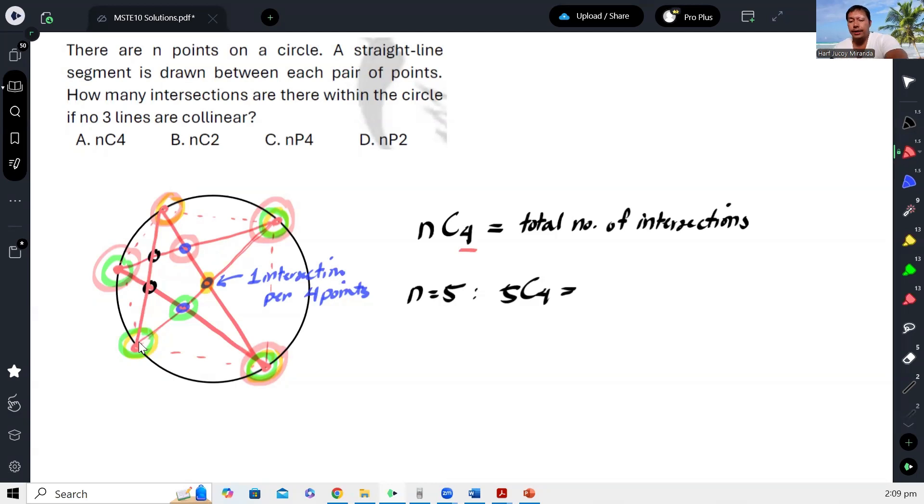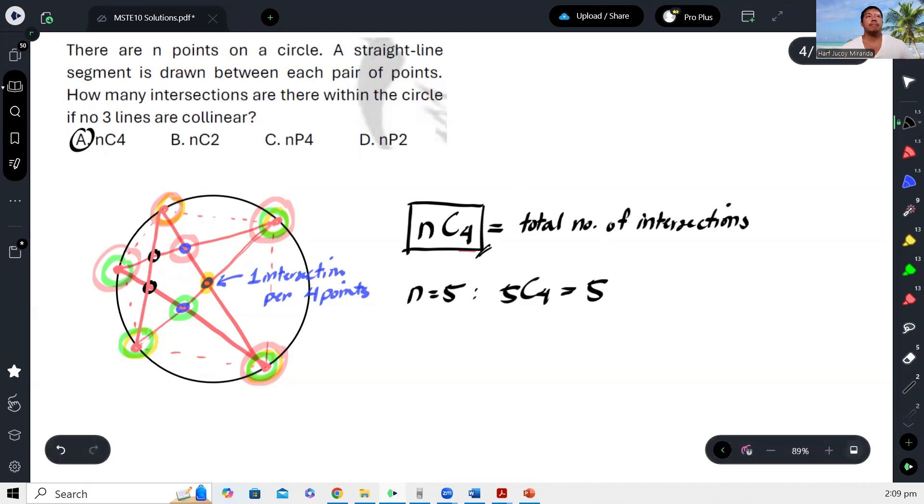Okay, so therefore this is 5 kapag 5 yung number of points. So pag ginawa pa natin 6 yan, this will work every time, this formula. So that's why this is our answer. Okay, so the answer is letter A. So that's how we solve this problem.